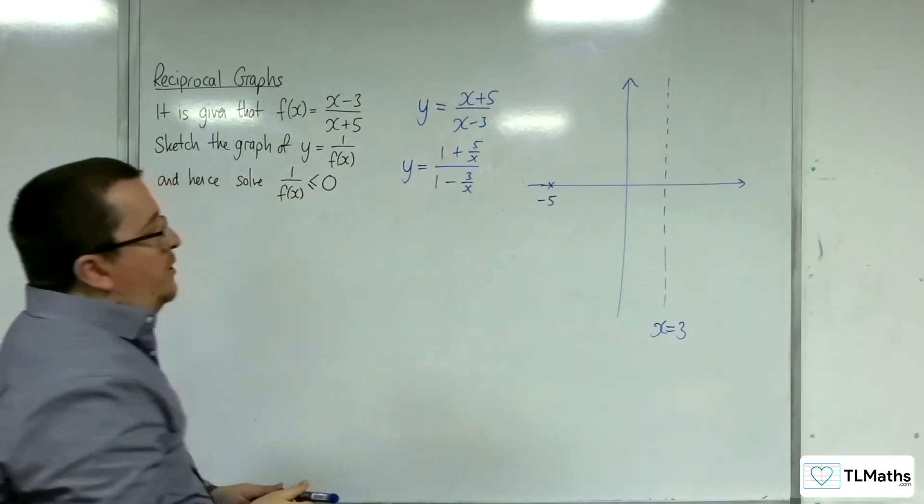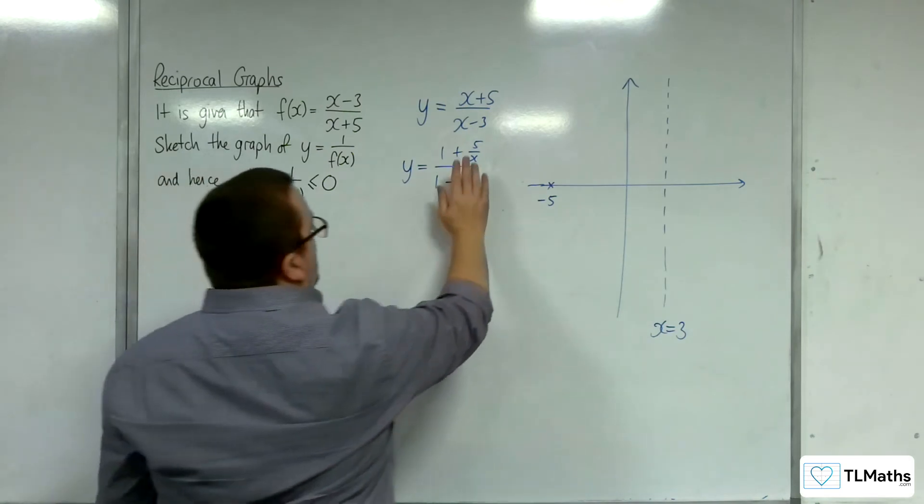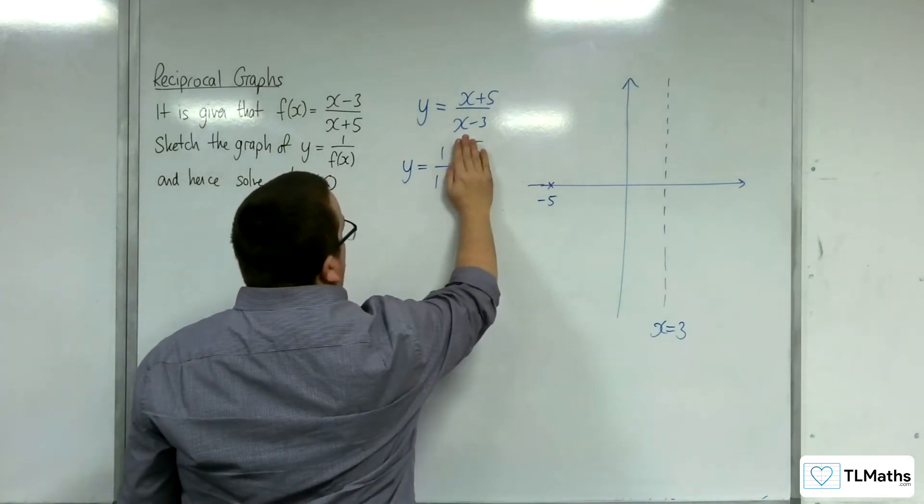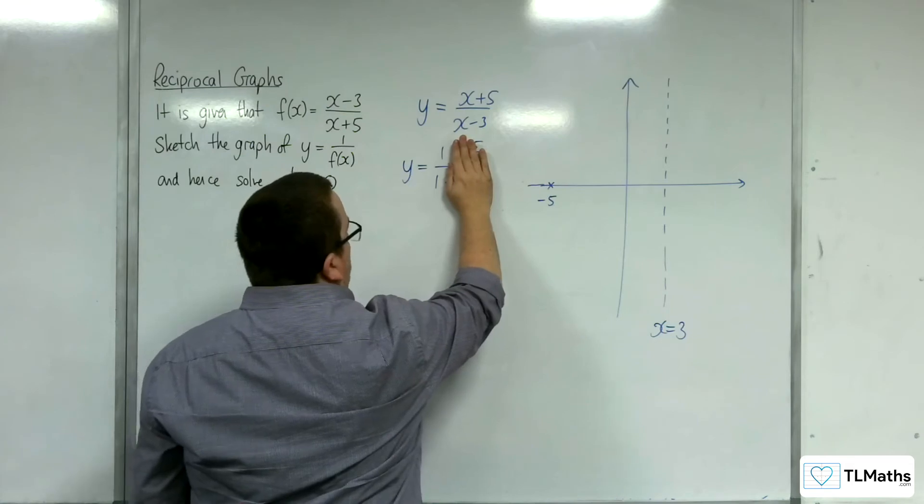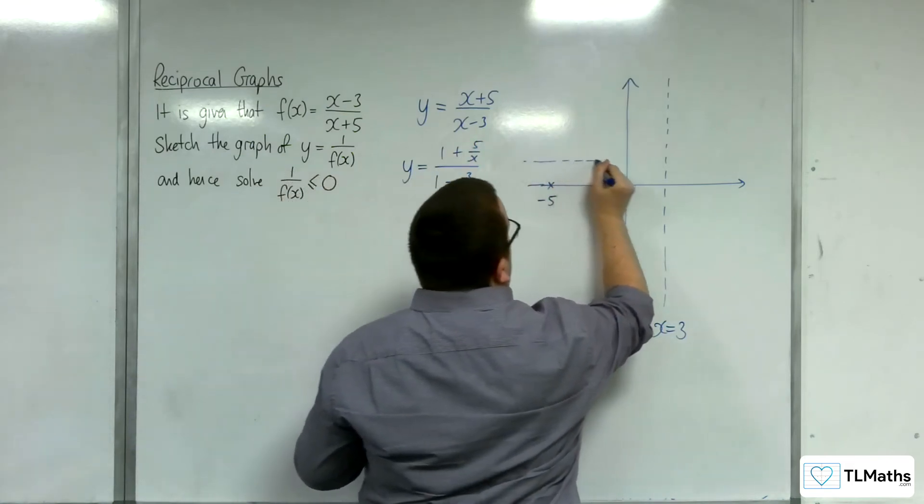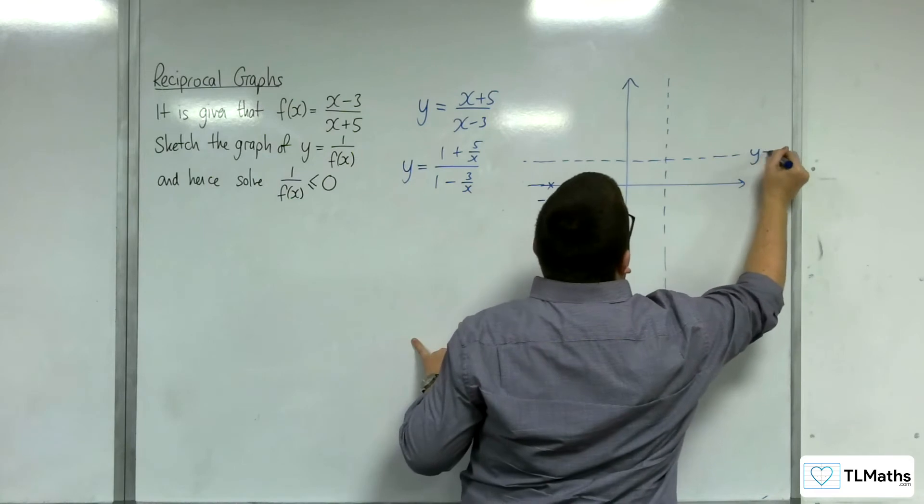And as x gets larger and larger in either positive or negative direction, 5 over x and 3 over x will tend to 0 and this will tend to 1 over 1, which is 1. And so, there is a horizontal asymptote at y equals 1.